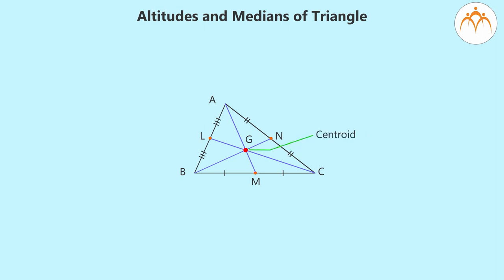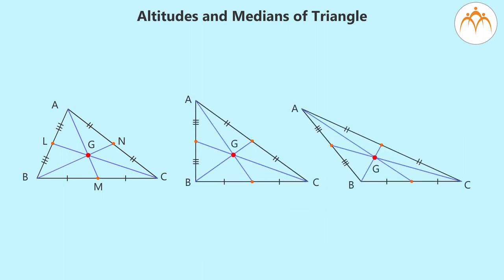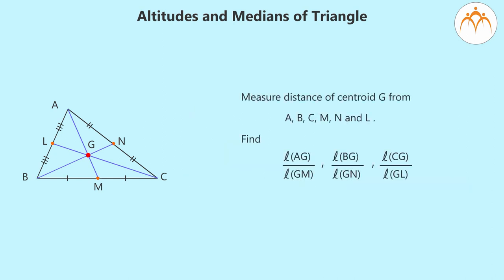What do you see? All three medians of triangle ABC are concurrent, that is they pass through a common point G. This point is called as centroid of triangle ABC. Centroid of any triangle always lies inside the triangle.